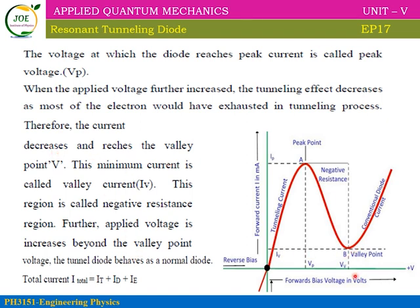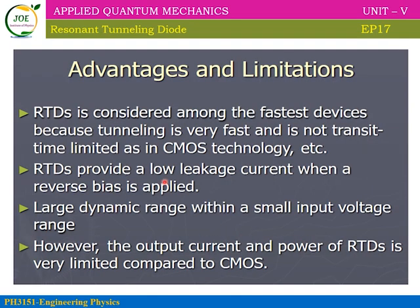If we increase the voltage again beyond the valley point, it behaves like a normal diode — the current increases again. This tunneling behavior is called resonant tunneling. The total current is equal to the sum of the tunneling current, the diffusion current, and the excess current: I_total = I_t + I_d + I_e.